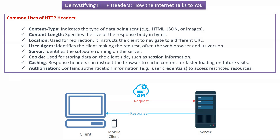The sixth one is cookie, which is used for storing data on the client side, such as session information. The seventh one is caching — response headers can instruct the browser to cache content for faster loading on future visits. The eighth one is authorization, which contains authorization information, such as user credentials, to access restricted resources.